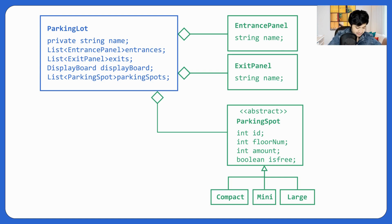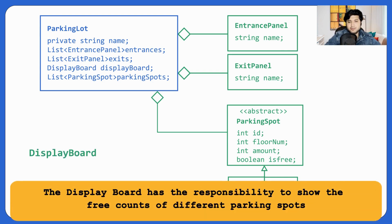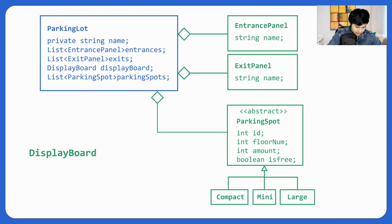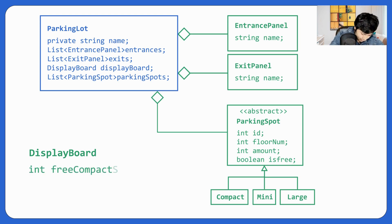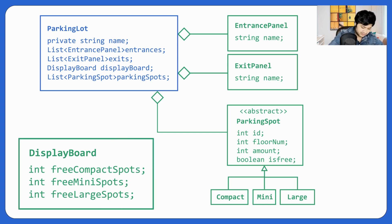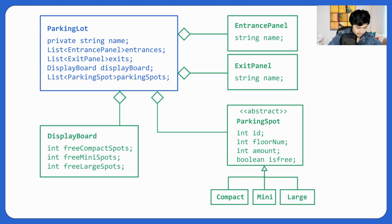Let's build the DisplayBoard. DisplayBoard has the responsibility to show free counts of different parking spots. We can have them as integers: int freeCompactSpots, int freeMiniSpots, and int freeLargeSpots. That should be good. And again, parking lot is composed of DisplayBoard, so we have that relation here.